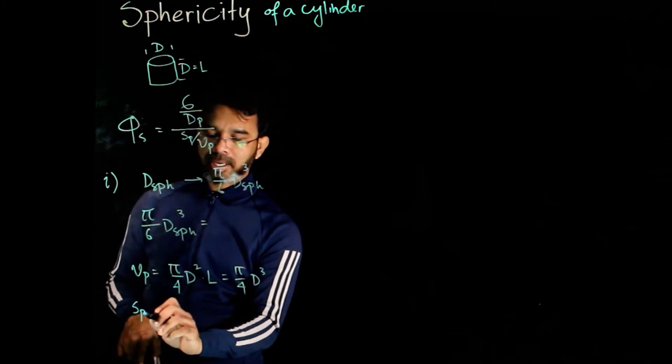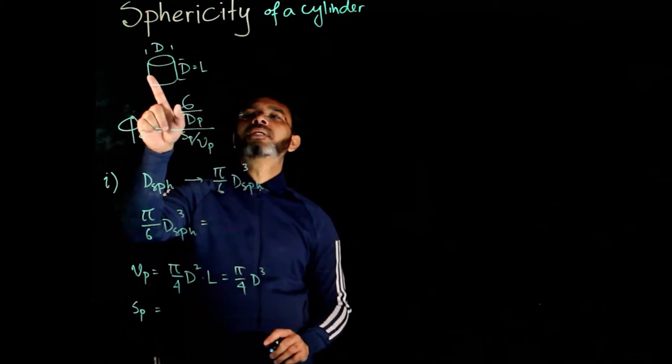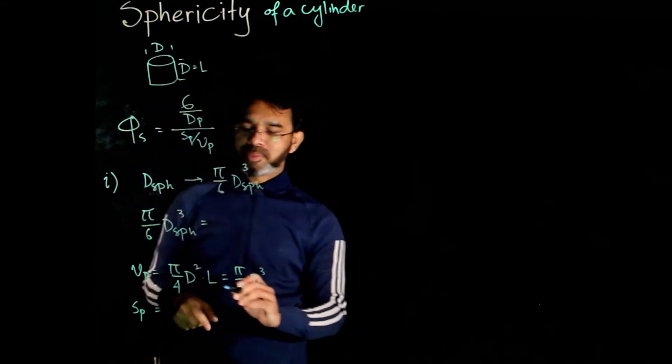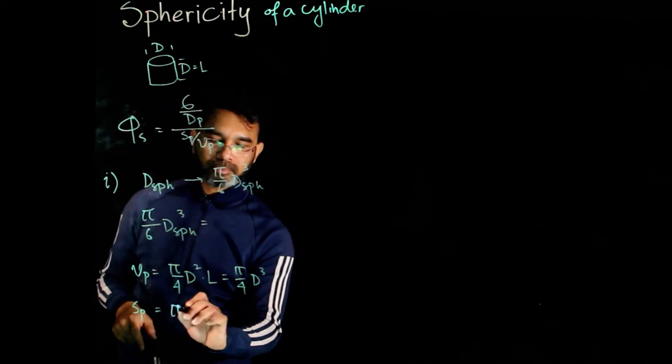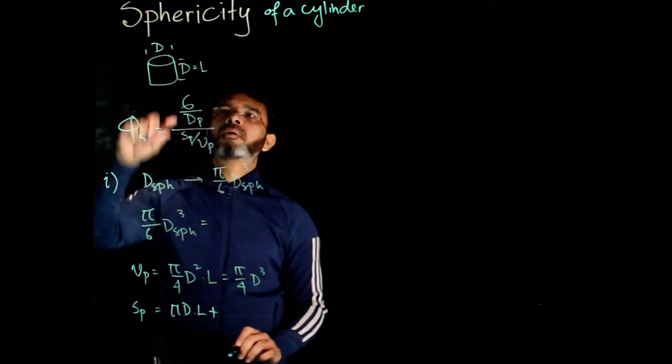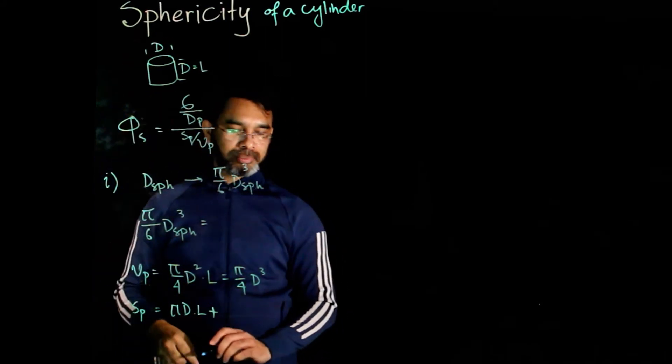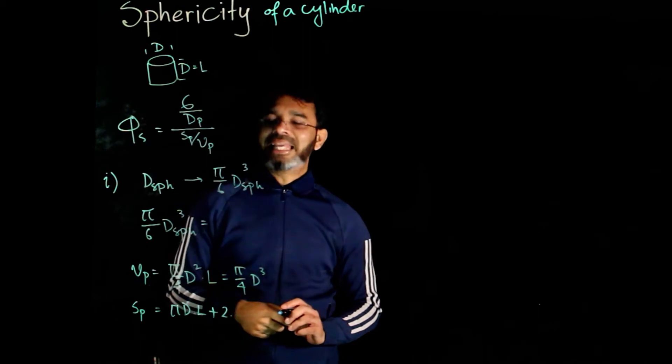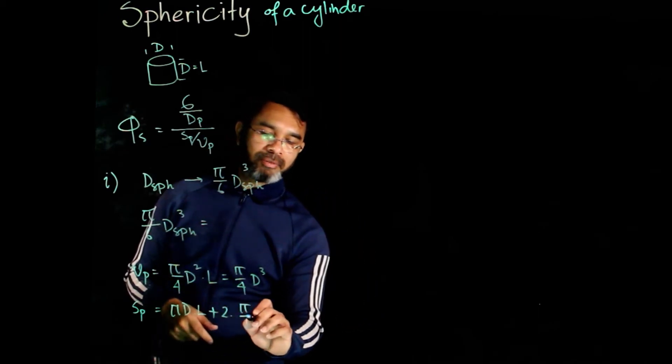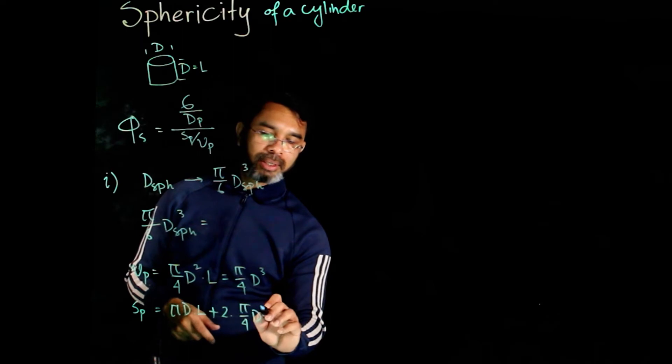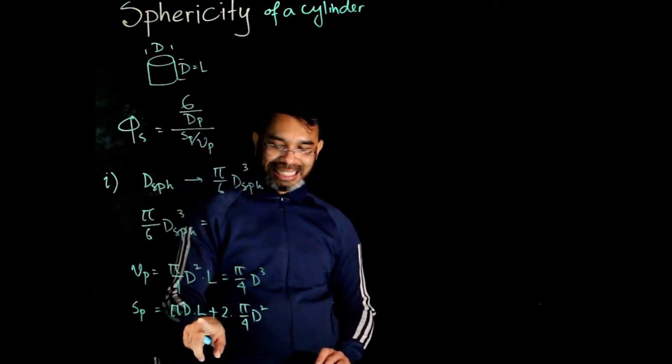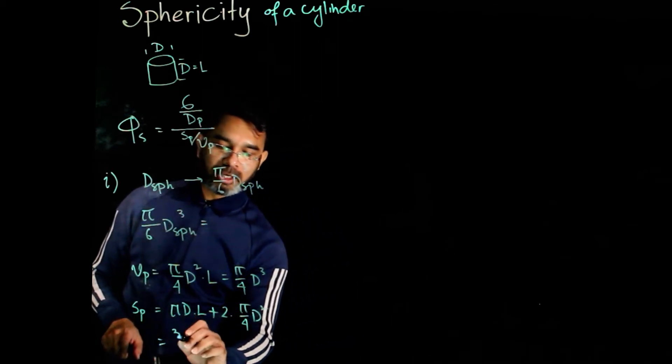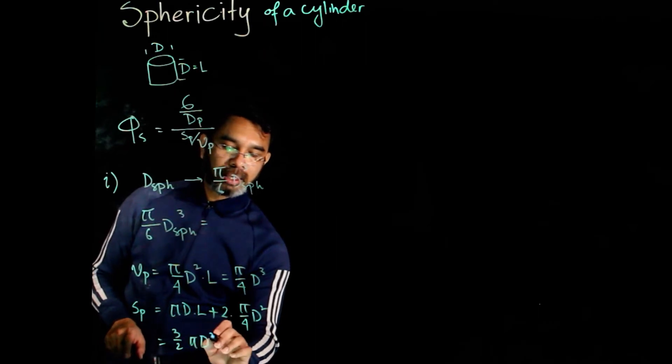And for the surface area, you get the surface area of the cylindrical part pi d times l plus there are two circular parts. So, 2 times the surface area of each, which is pi over 4 d squared. Now, plug in l equals d, we have pi d squared plus half pi d squared. This gives us 3 over 2 pi d squared.